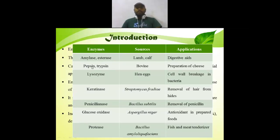The next example of enzymes is pepsin and trypsin. We get these from bovine sources, and the application of these enzymes is in preparation of various products. Likewise, there are numerous examples of enzymes with their sources, used in applications such as antioxidants in foods like fish, meat, and so on.